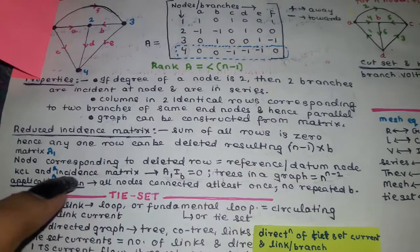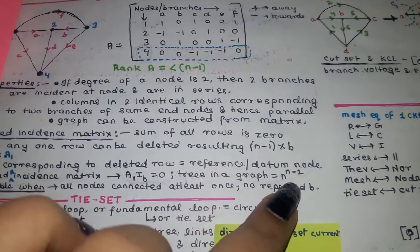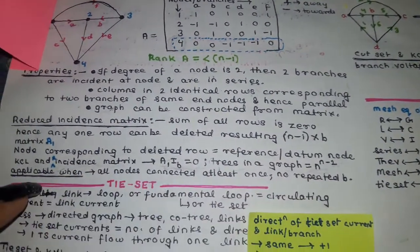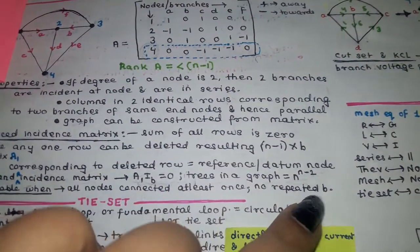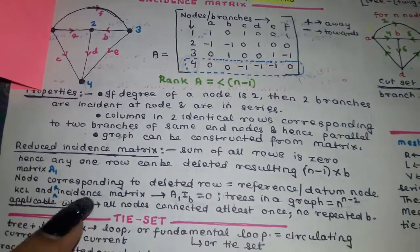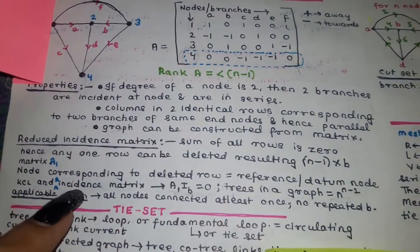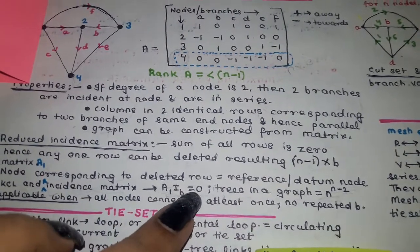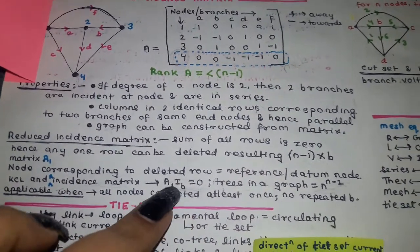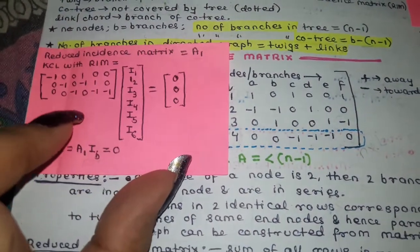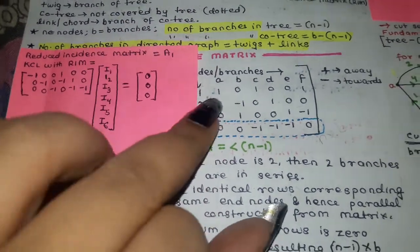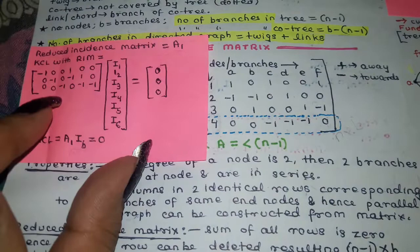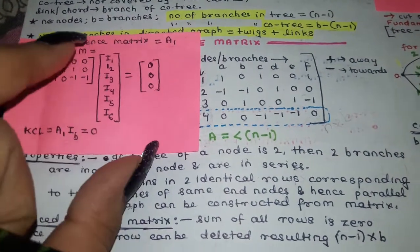Now let's talk about KCL and the incidence matrix. The number of trees in a graph is given by the formula n to the power n minus 2. This is applicable only when all nodes are connected at least once and there are no repeated branches. KCL and the incidence matrix have the relation A·I = 0, where A is the reduced incidence matrix and I is the branch current vector. This formula is used when a numerical problem asks for branch currents.